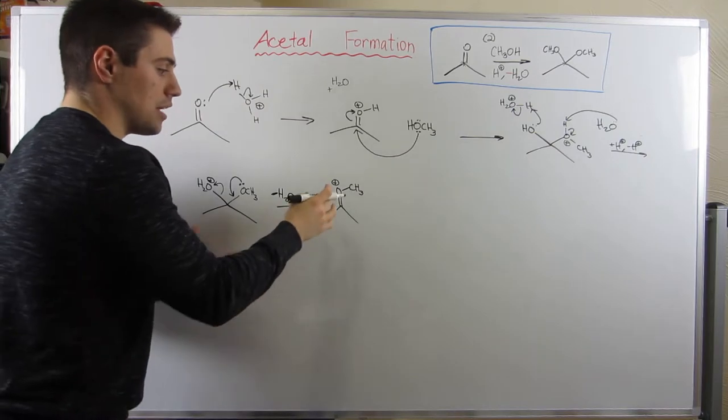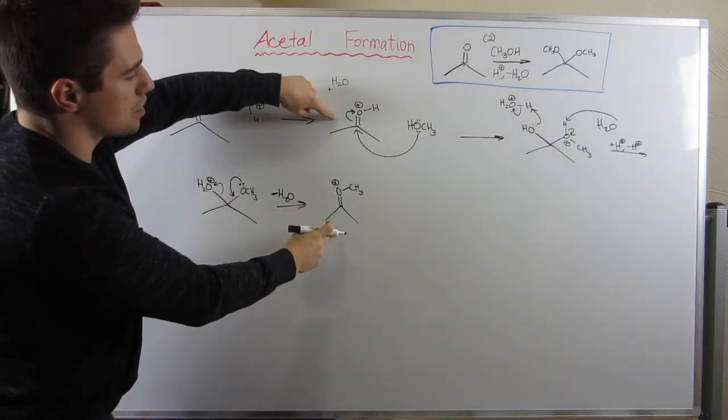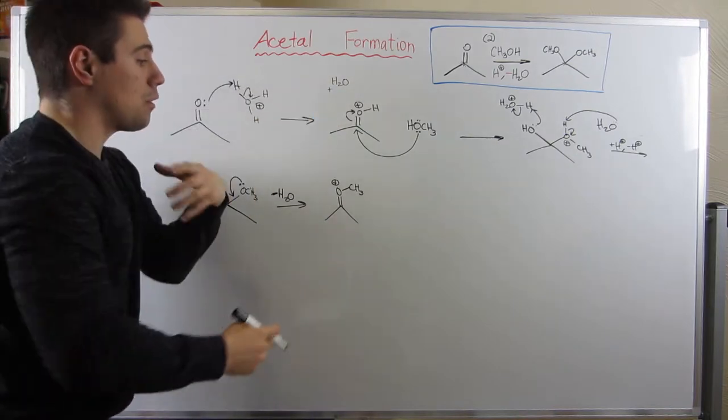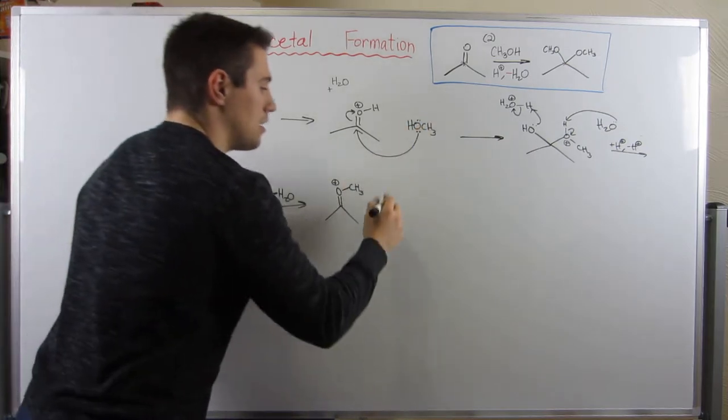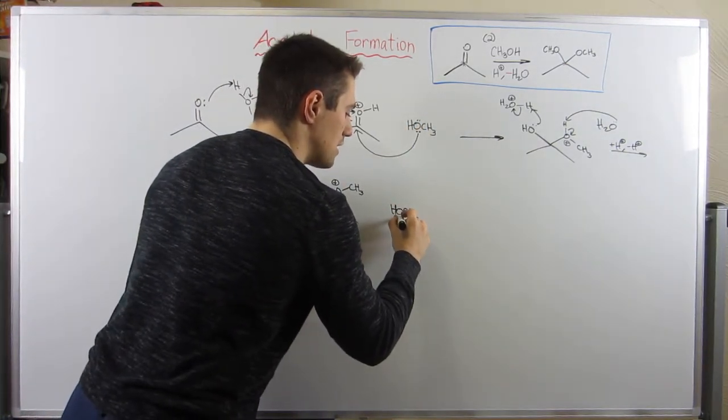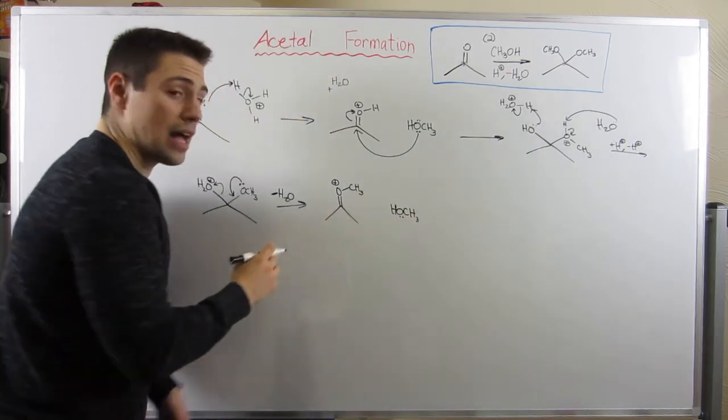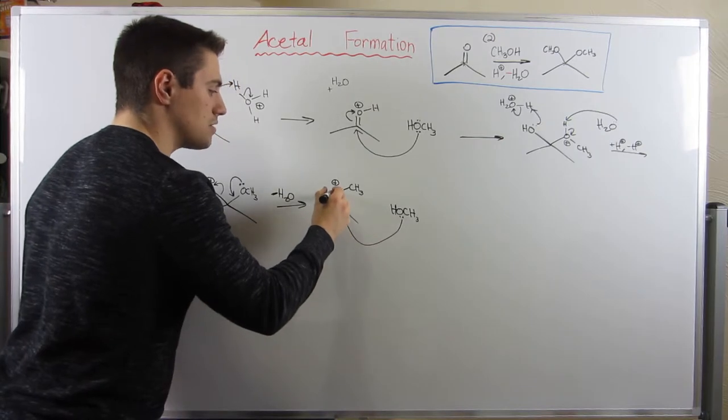Now what we're left with is this type of thing. We have a double bond to the oxygen and CH3. It kind of looks like the protonated carbonyl in the beginning. Well, if you use the same logic, we're going to take another methanol and we're going to attack because if we drew resonance, this carbon right here still has a positive charge. So let's come in and attack, take the electrons up.